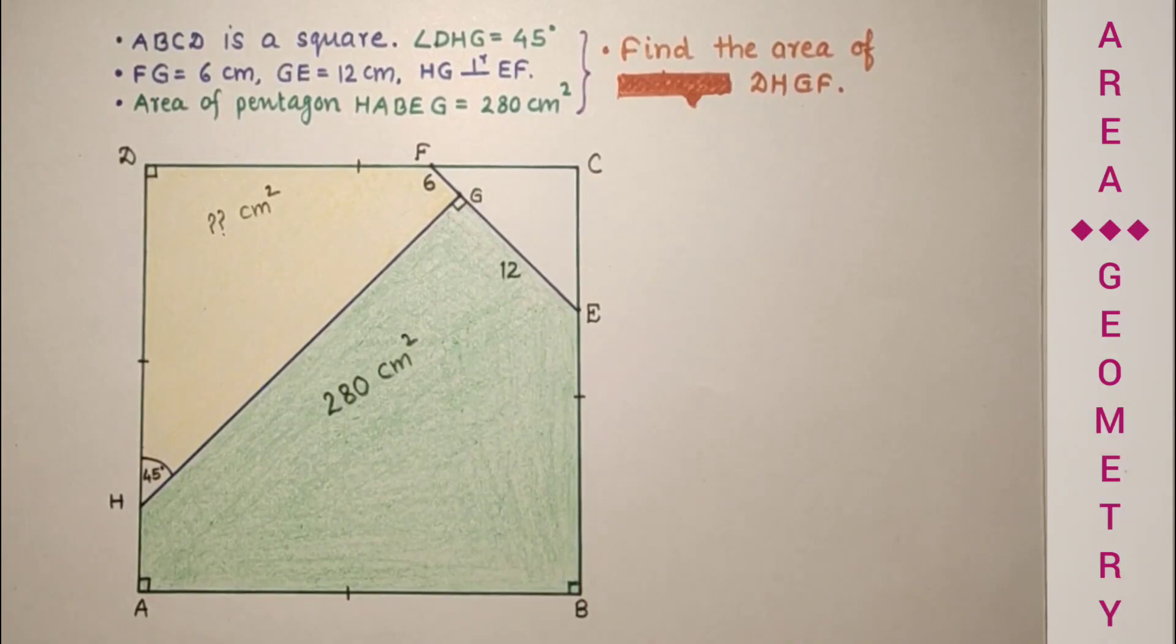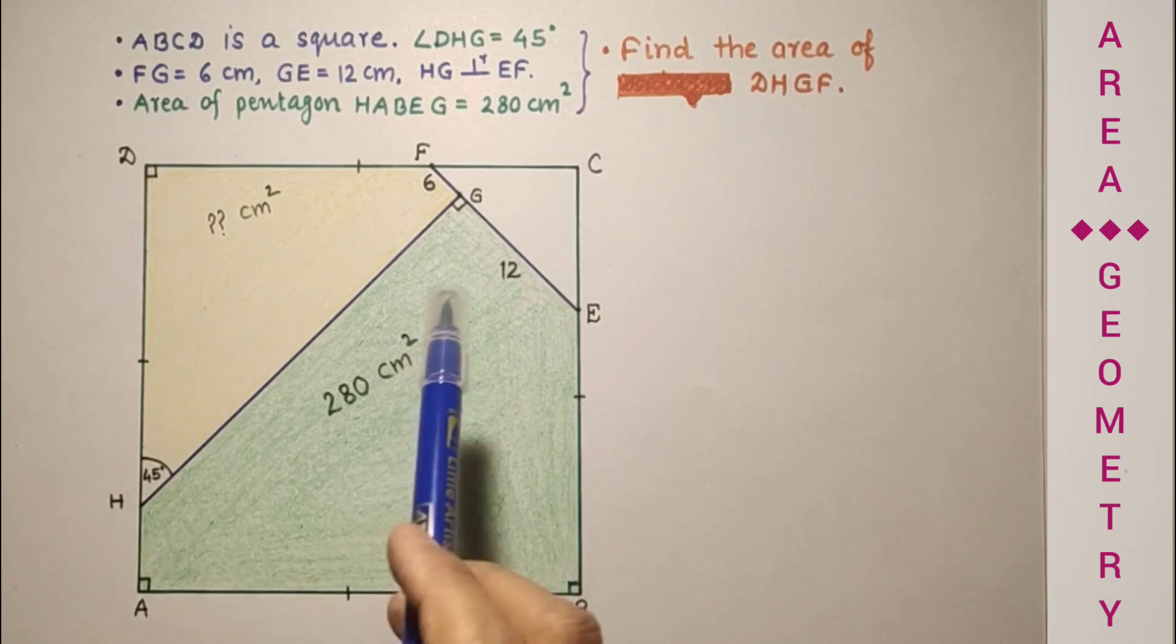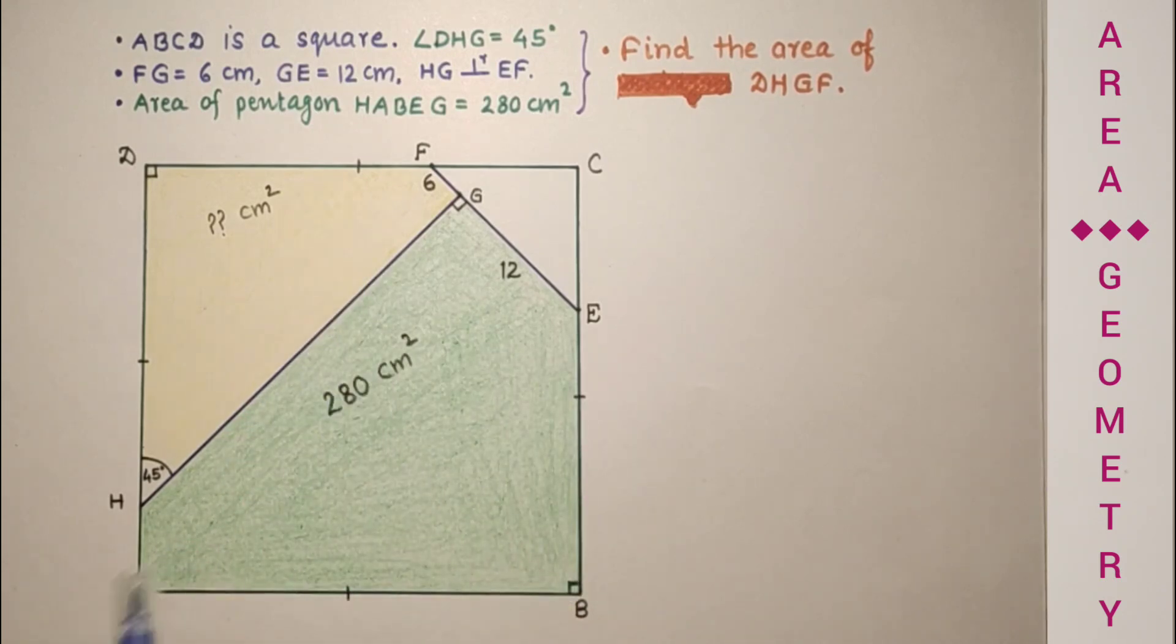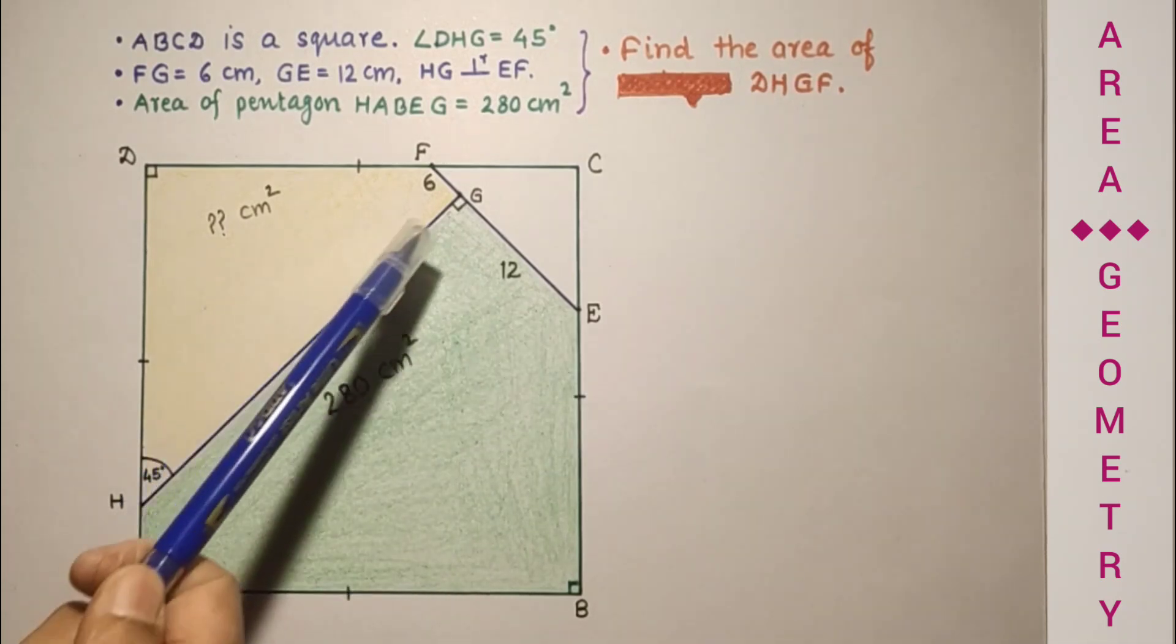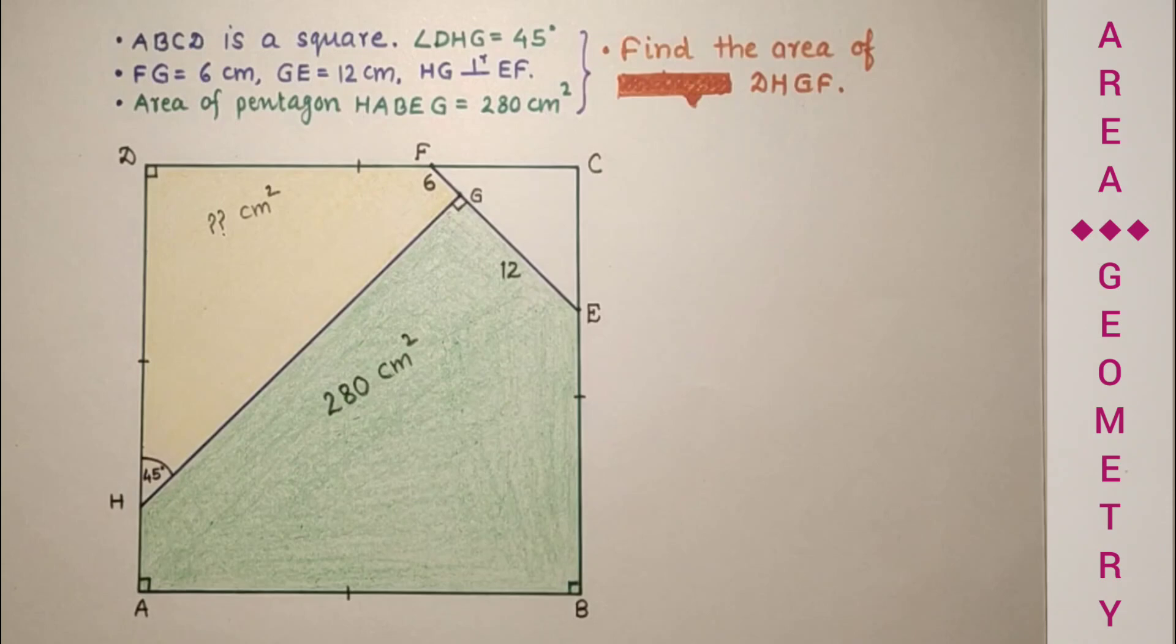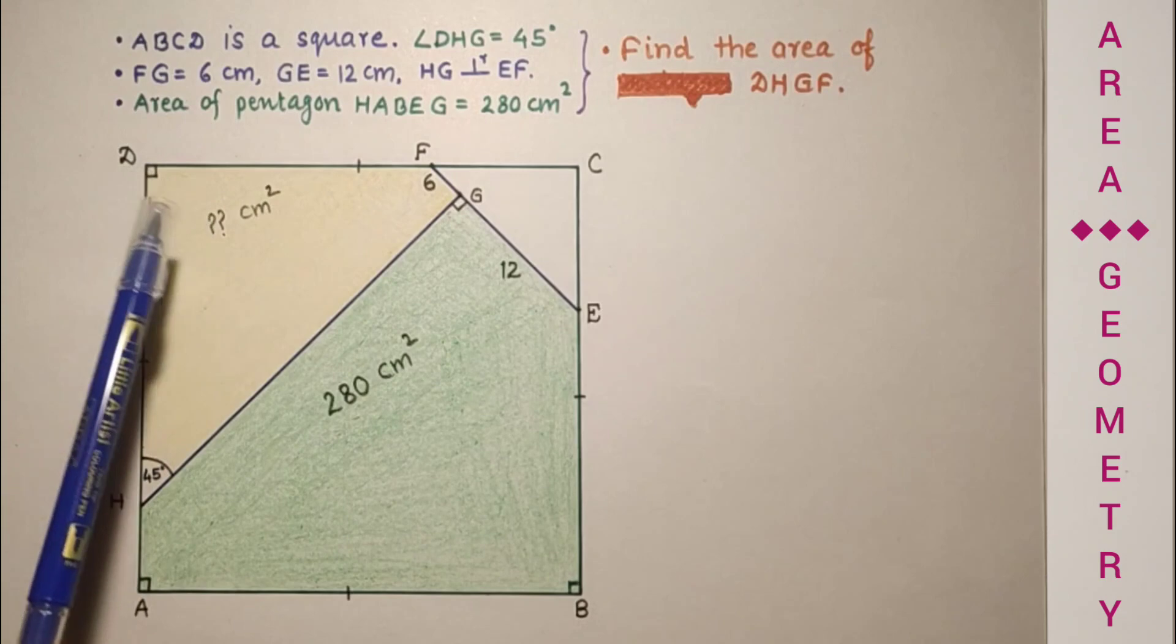Hello respected viewers, welcome to my channel. Today we will discuss this question. ABCD is a square, HG is perpendicular to AF, and angle DHG is 45 degrees. We are given the area of this pentagon HABEG is 280 cm square. EG is 12 cm and GF is 6 cm. We have to find the area of this quadrilateral HGFD.